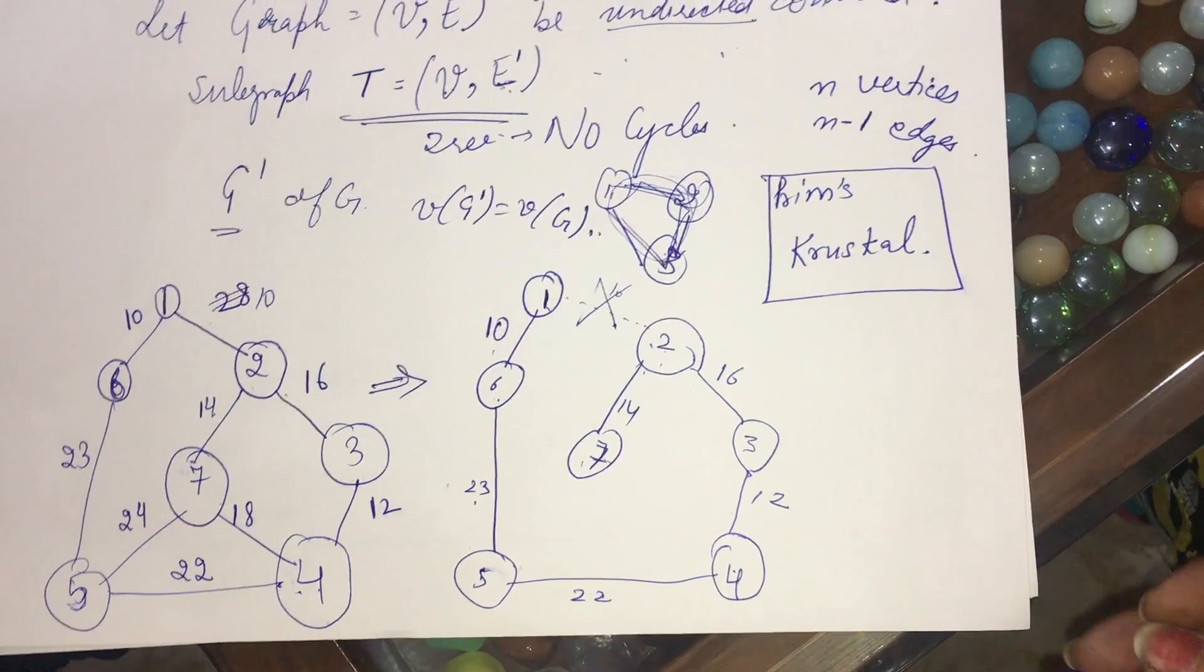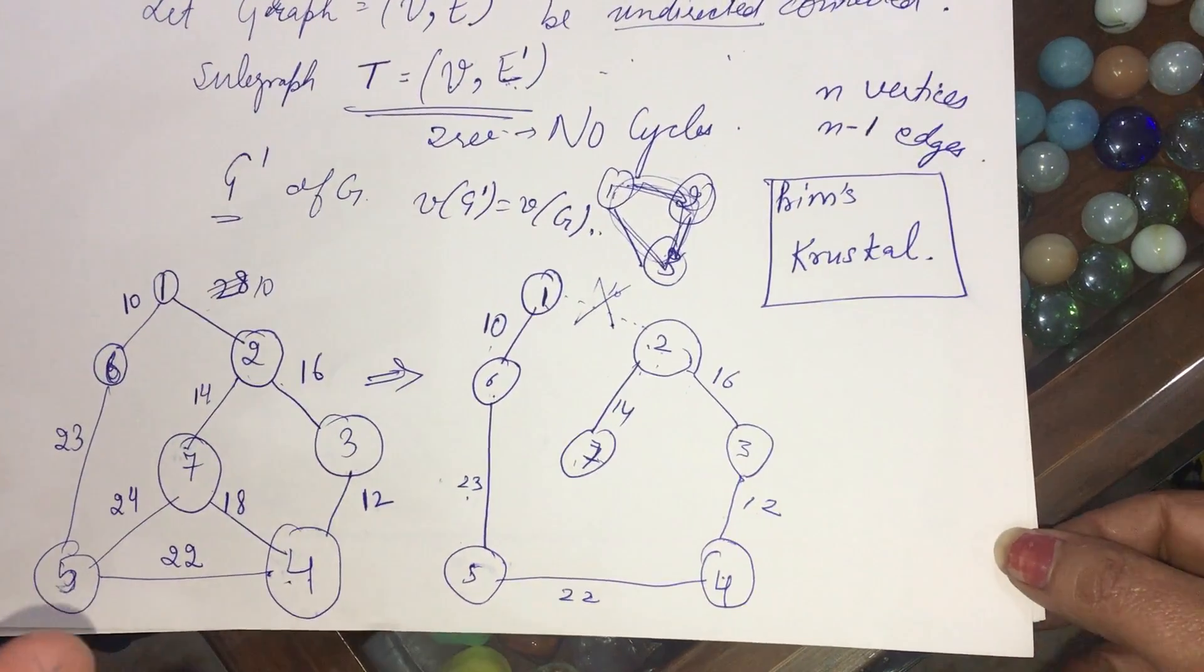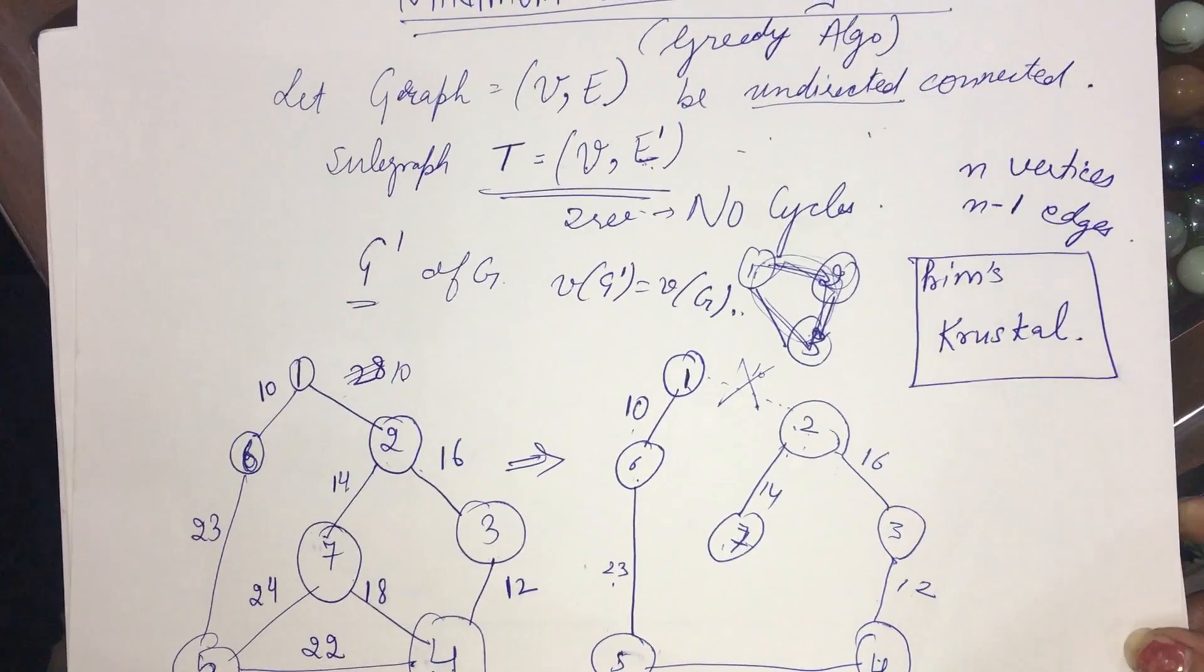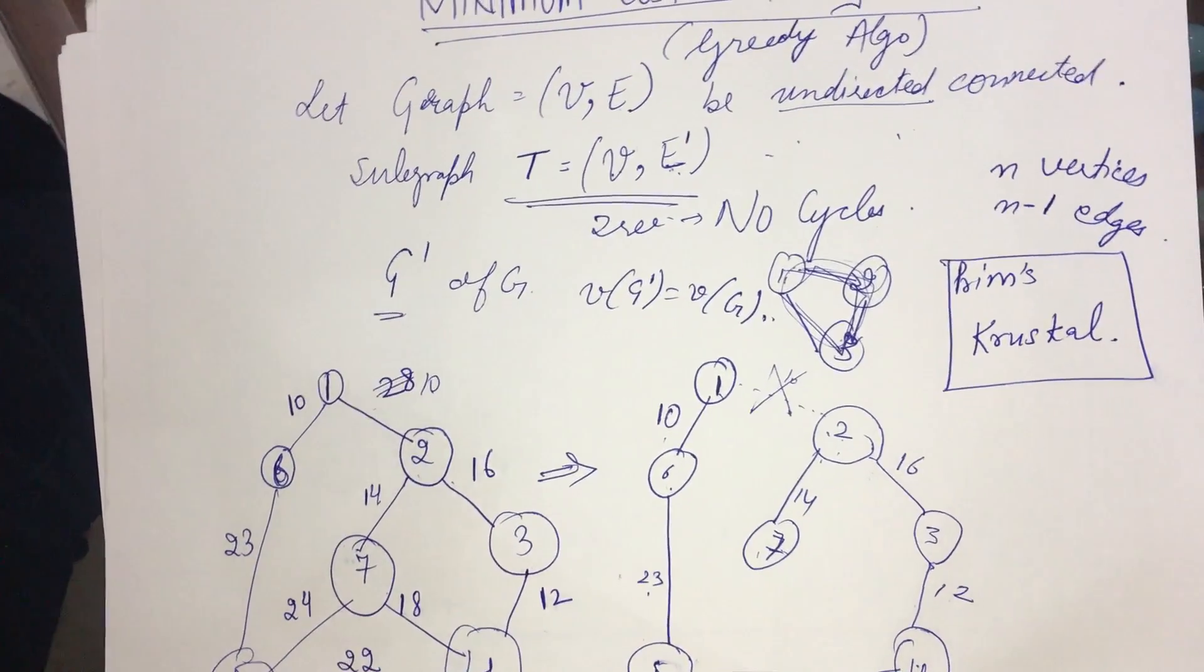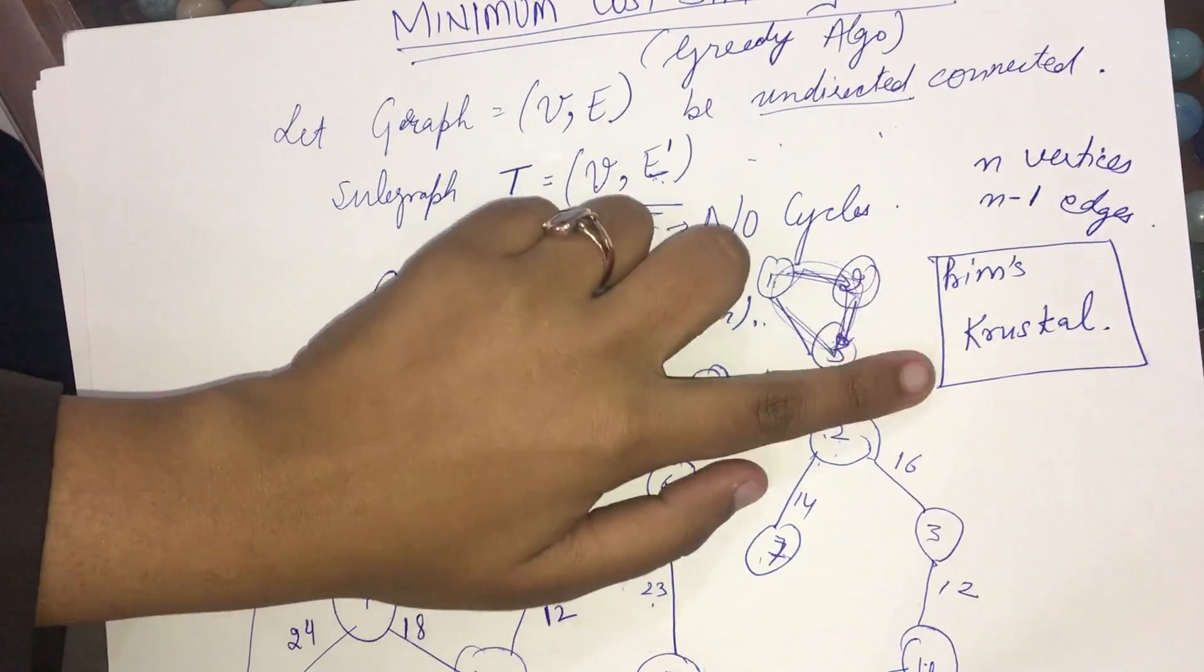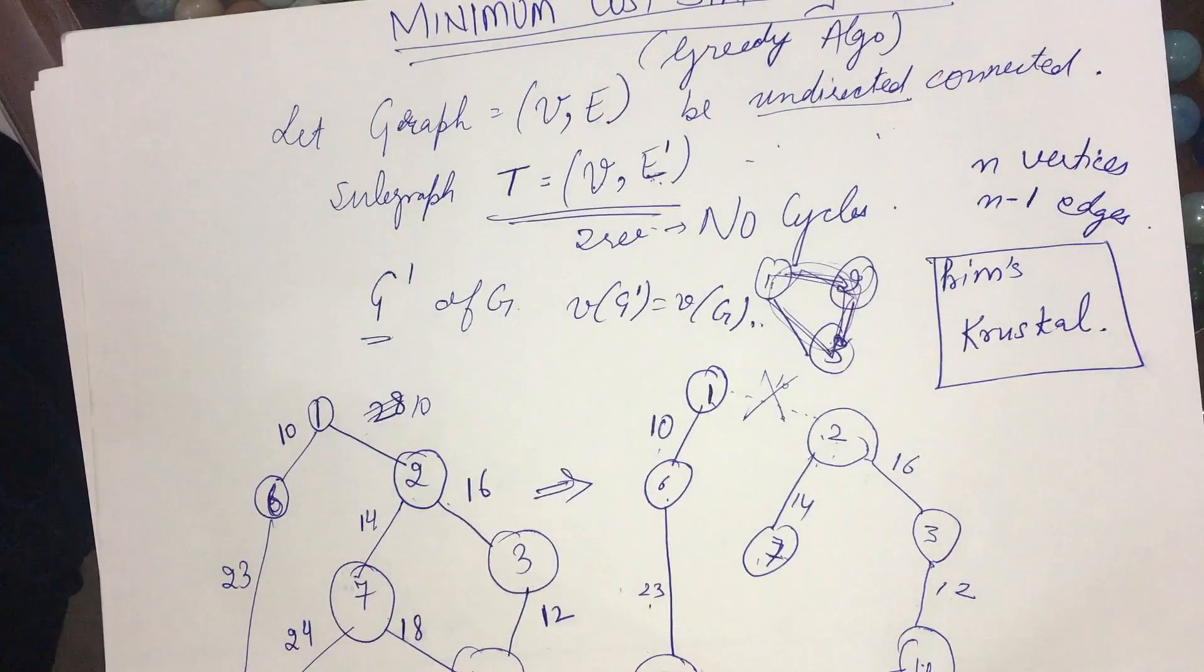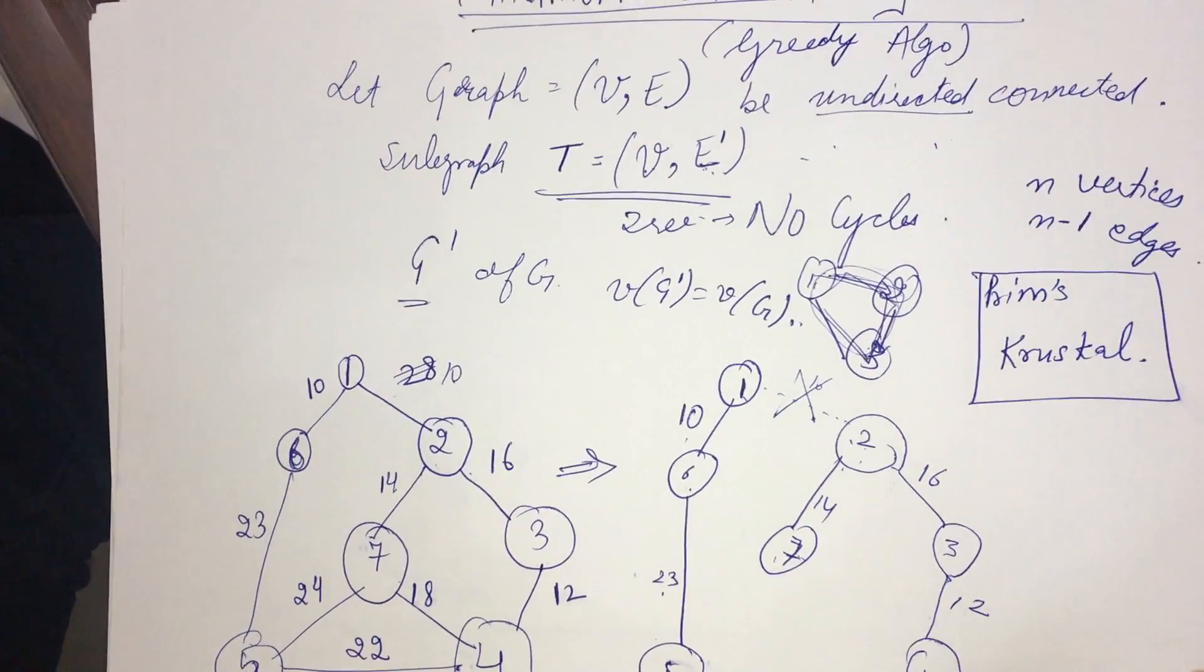Our main motive is to find the minimum of all the spanning trees. Finding a spanning tree is very easy. We will see in the next presentation. Finding the spanning tree is very easy, but if we have to find the spanning tree with the minimum cost, then we have to use the algorithms that we are going to discuss in the next video. Thank you for watching. That's all for this video.